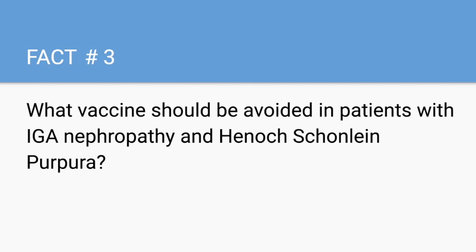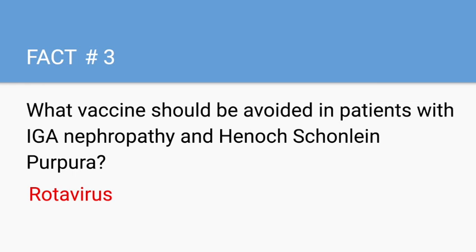What vaccine should be avoided in patients with IgA nephropathy and Henoch-Schönlein purpura? Rotavirus. Patients with IgA nephropathy and HSP have an increased susceptibility to developing intussusception, which is a contraindication for the administration of the rotavirus vaccine. Be sure to look out for an extremely high-yield video comparing these two conditions.